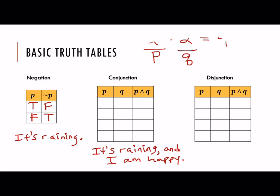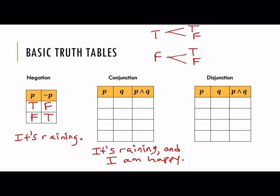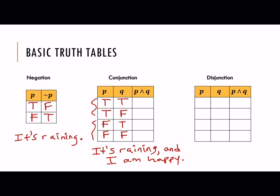We could have made a tree diagram to see this. P could either be true or false. If P is true, Q could either be true or false. If P is false, Q could also be true or false — so there are four different options. When filling in truth tables, there is a standard order: we always start by doing trues followed by falses. P can be true in two cases — either if Q is true or Q is false. Then P is false in two cases, and Q can either be true or false. Trues come before falses.